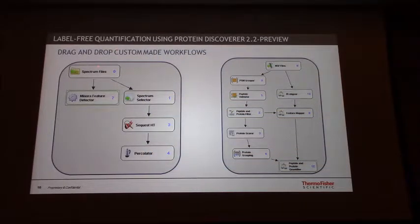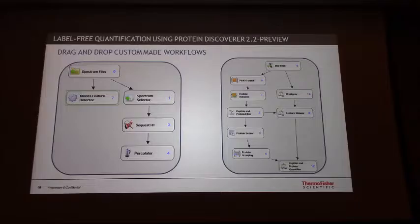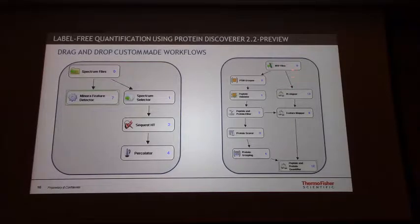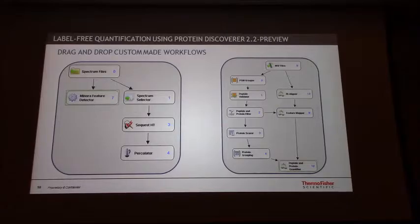This is the current workflow we have in Proteome Discoverer. It's a drag-and-drop plugin system that you can install for the spectrum files, and then we have the Minora feature detector node — what this node does is discover all the features within the run. In the other branch, we do a standard database search. Then we have the consensus workflow, where we have plugins for retention time alignment, a feature mapper that maps the peptide identifications, peptide and protein quantities to the features, and finally a peptide and protein quantifier that provides intensities for the identified peptides and proteins.